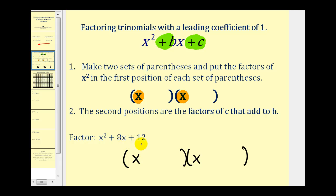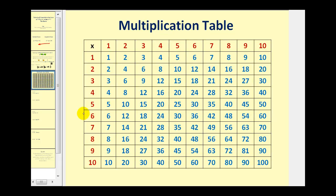Now if you know your multiplication tables really well, you can probably already tell what those factors would be. If not, list all of the factors of 12: it could be 1 times 12, but that doesn't sum to positive 8. Then 2 times 6, and 2 times 6 does add to positive 8. Therefore these are the terms that go in the second position. Both terms are positive, so we'll have x plus 2 and x plus 6. We could also have put the plus 6 first — multiplication is commutative.